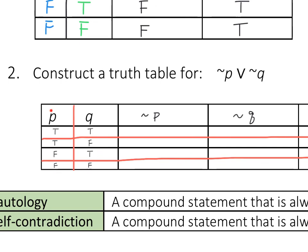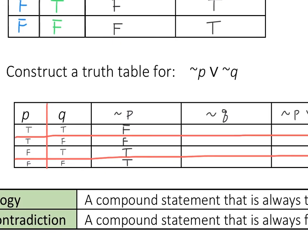Now I'm just looking at column P to determine what not P is. If P is true, not P is false. If P is true, not P is still false. If P is false, not P is true. If P is false, not P is still true. Now to fill out our column for not Q: if Q is true, not Q is false. If Q is false, not Q is true. If Q is true, not Q is false. And if Q is false, not Q is true.